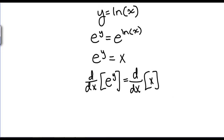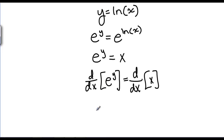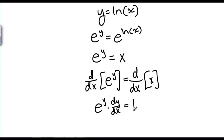Using implicit differentiation, the derivative of E to the Y is E to the Y times the derivative of Y, because it's the chain rule, so that's DY/DX, and that's equal to the derivative of X. Now the derivative of X in terms of X is just 1. Now we need to solve for DY/DX. We get DY/DX is equal to 1 over E to the Y.